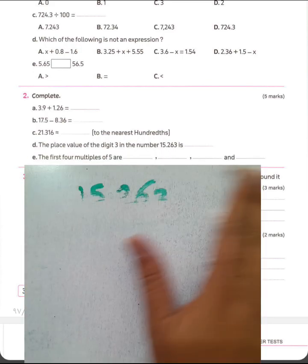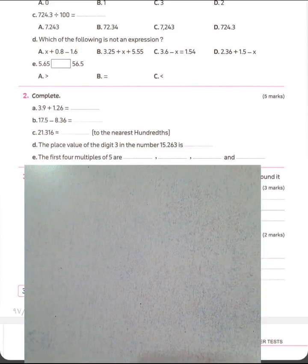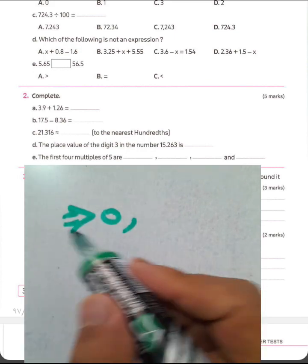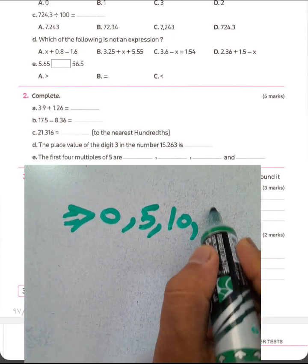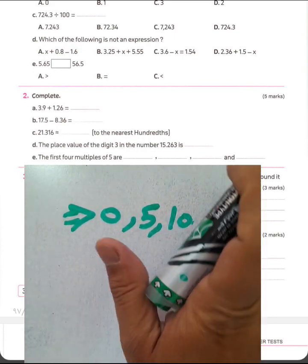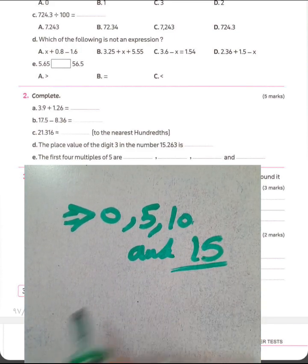Question letter E. The first four multiples of 5 will be what? Multiples of 5 beginning by 0 and all the time add 5. 5, 10, 15. Okay. 0, 5, 10, and 15.